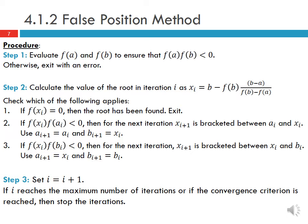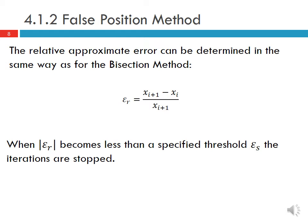Then we increase our counter, and if i reaches either the maximum number of iterations or if the convergence criterion is reached, then we stop the iterations. Otherwise we return to Step 2 with our new interval at i+1. The relative approximate error can be determined in the same way as it was for the bisection method, where εr equals (xi+1 - xi) divided by xi+1, so our current estimate minus our previous estimate divided by our current estimate.